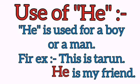For example, this is Tarun. This means 'yeh hai Tarun'. Tarun ek ladke ka naam hai. So, neeche dekhiye — Dash is my friend. Ab Tarun ek boy hai, toh blank mein kya fill karenge? Boy ke liye kya use hota hai? He use hota hai. So, we will use 'He' here. He is my friend. Vah mera achha dost hai.